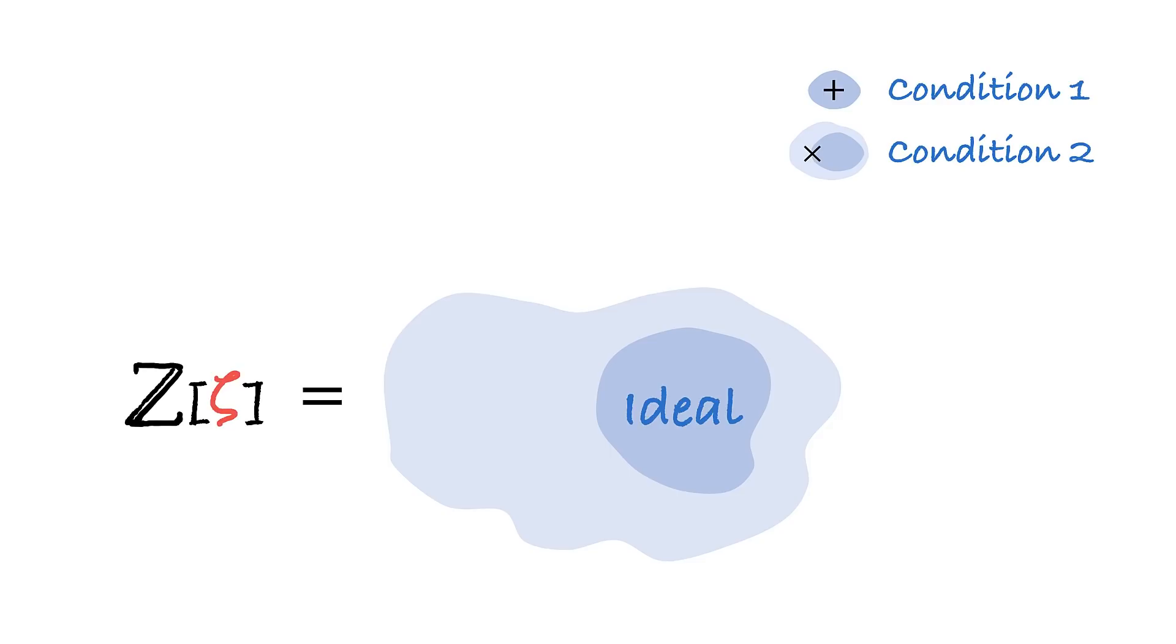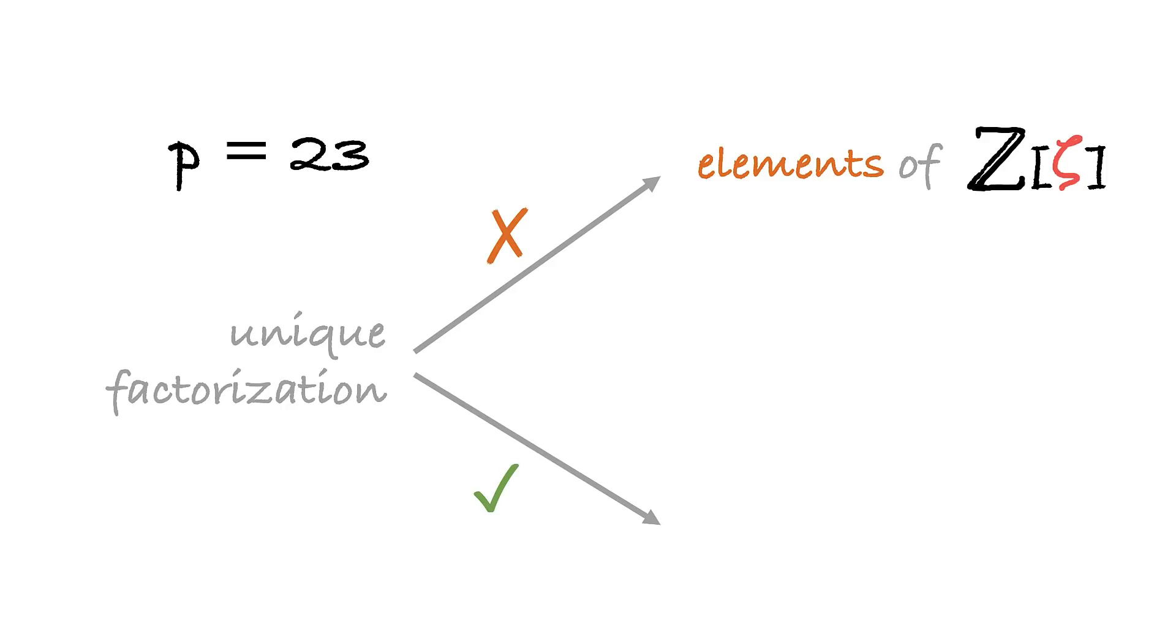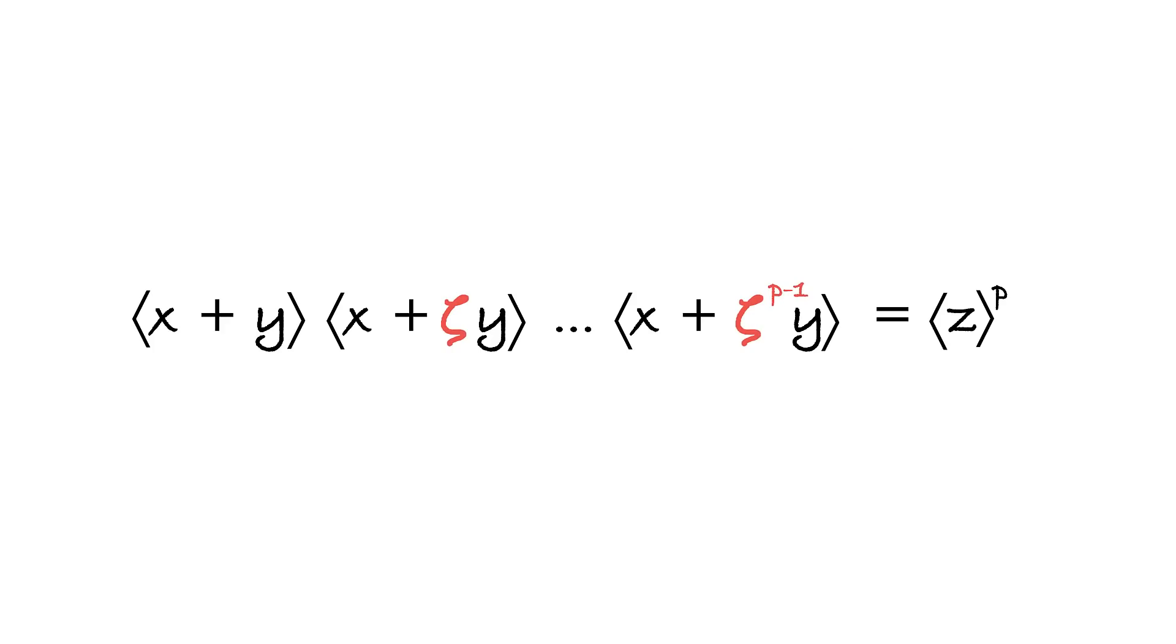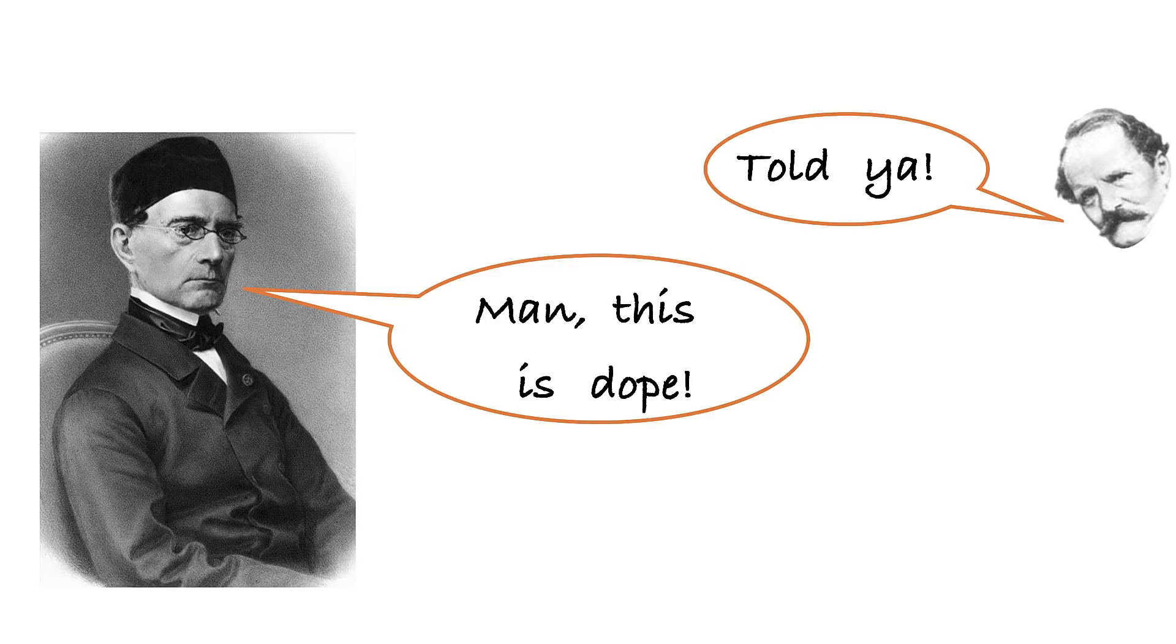So here's why we deeply care about ideals, and as a matter of fact, why we call them so. It turns out that for p equals 23 and for a broad variety of other prime numbers, even though unique factorization doesn't hold for elements of ring Z[zeta], it nevertheless holds for its ideals. And that basically allows us to utilize Lamé's formula pretty much in the same way, only instead of numbers we use ideals generated by those numbers. But the conclusion is the same, and Fermat's equation does not have positive solutions, which is exactly what we needed.